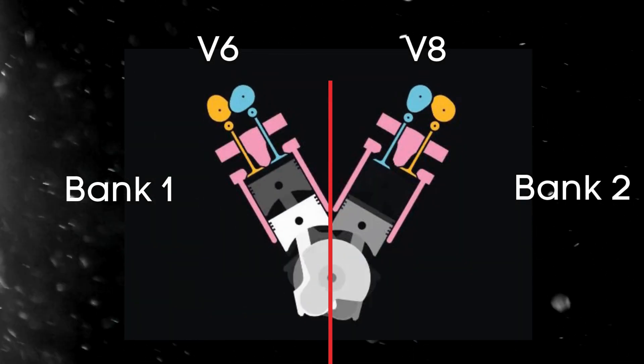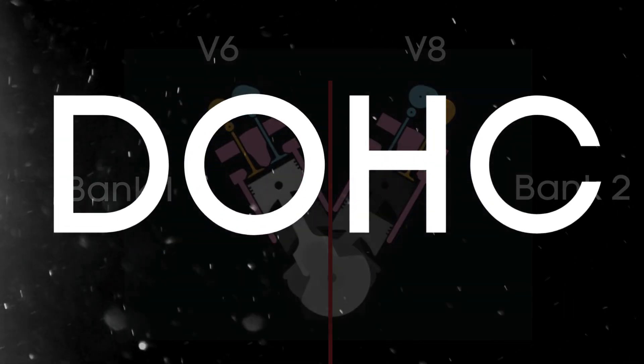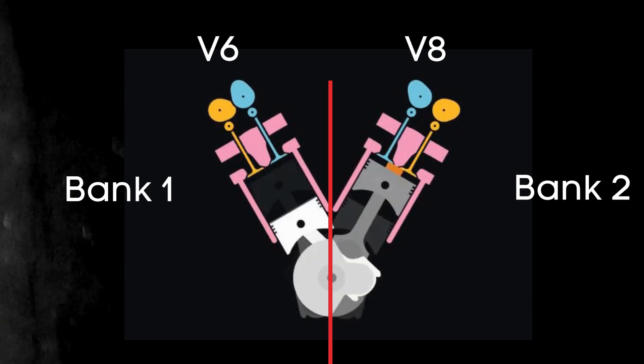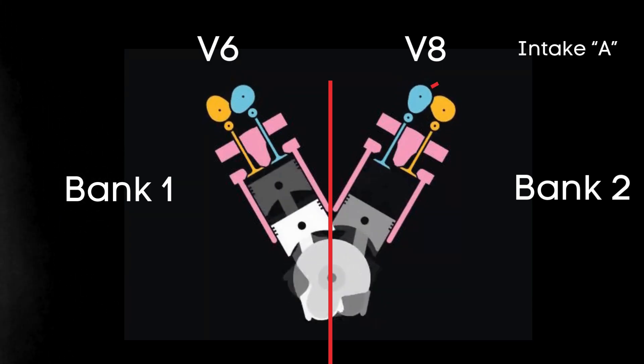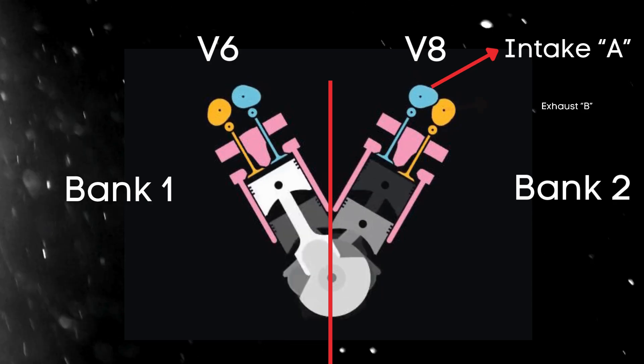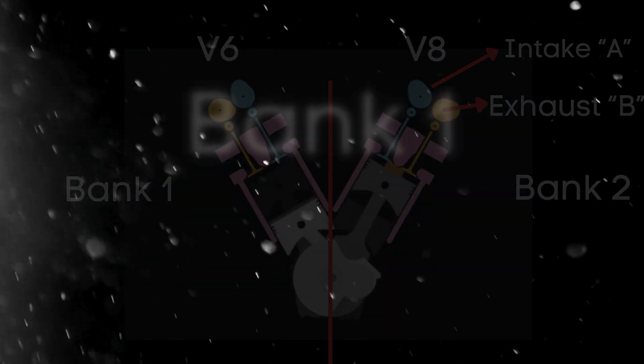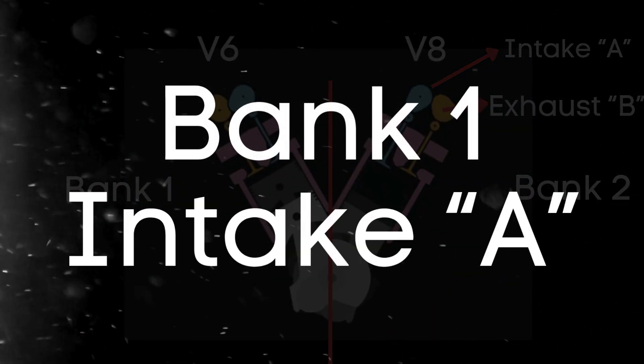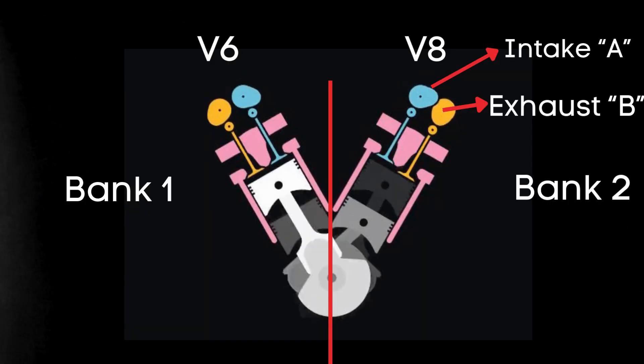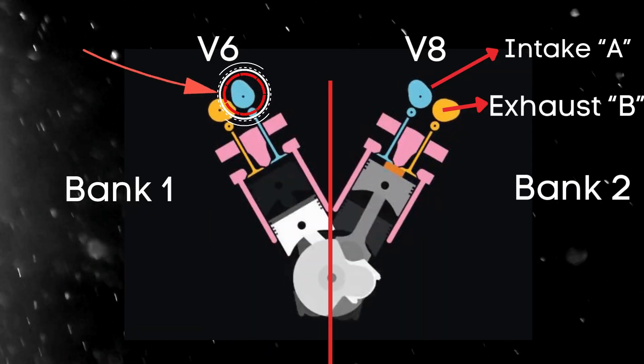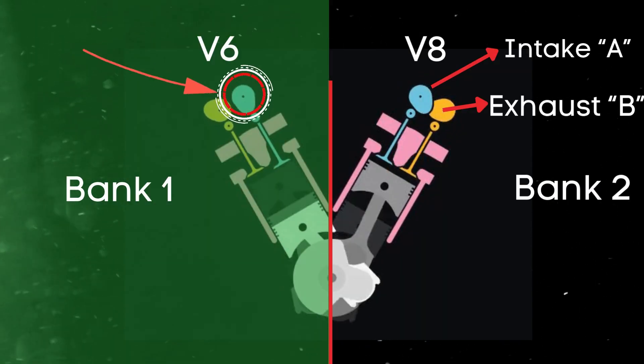For engines with dual overhead camshafts (DOHC), each bank has two camshafts, one for intake valves and one for exhaust valves. So when we talk about the bank 1 intake camshaft, we're referring to the camshaft that controls the intake valves on the side of the engine where cylinder 1 is located.